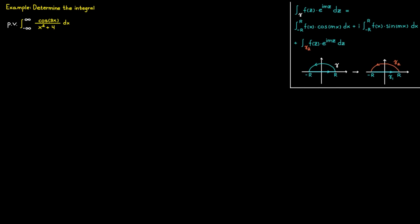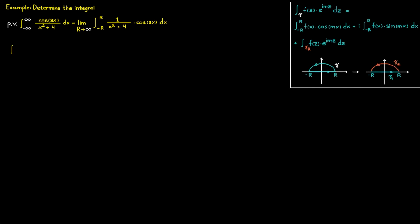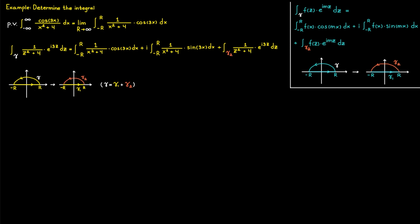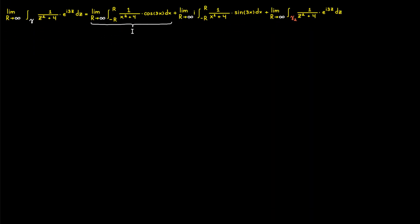We want to determine the principal value of this integral. Using the definition of principal value, f is equal to 1 divided by x squared plus 4, and the variable m equals 3. Inserting everything into our formula and then letting r approach infinity, we get the expression we are after, which we note as i.